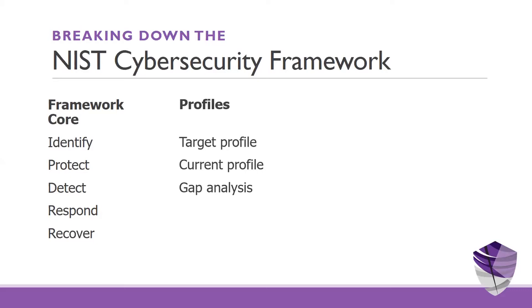Once you figure out what that target profile looks like for your organization, you then do an internal look and create your current profile. You do this by going through an assessment of the 108 controls and determining what you're doing today — do we have these policies in place, are we backing up data, is data at rest encrypted? All of these questions help you determine where you are today.